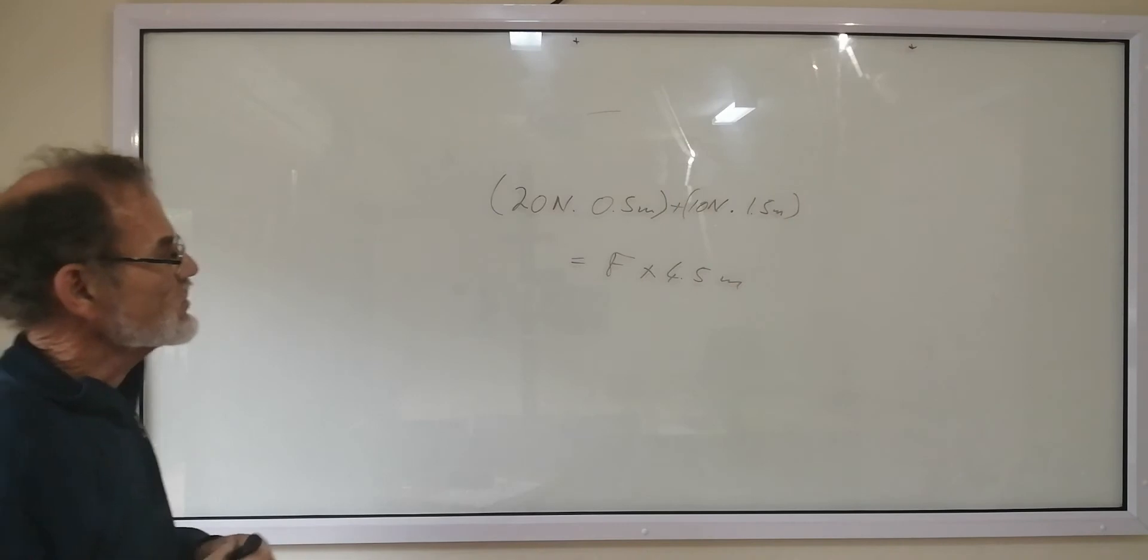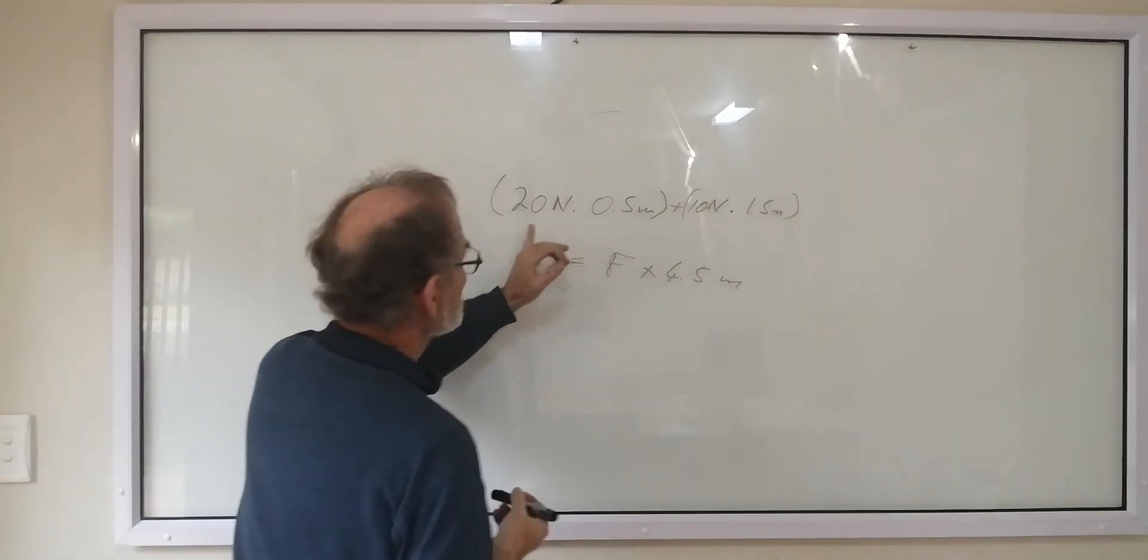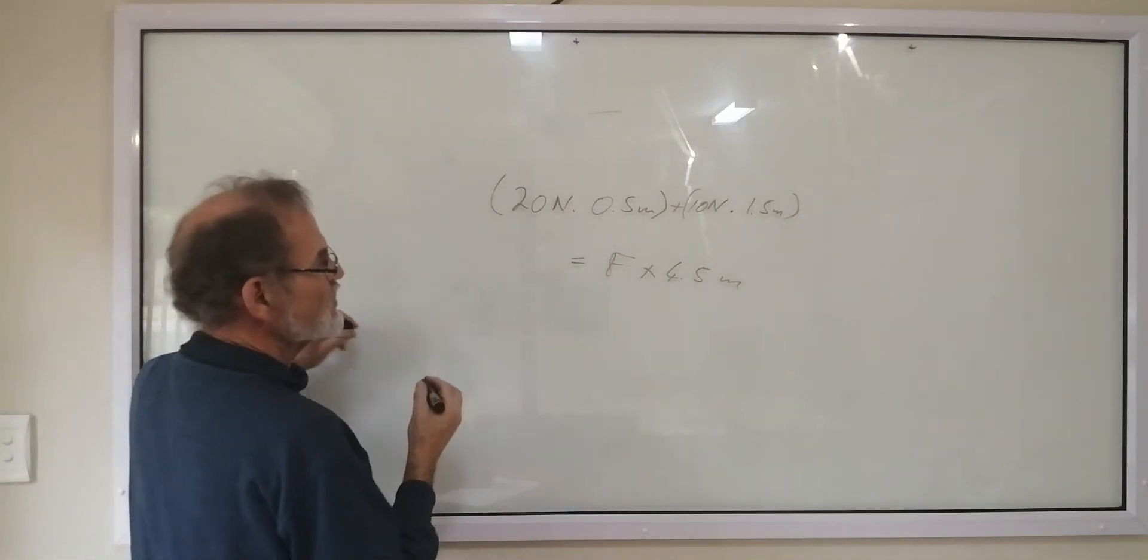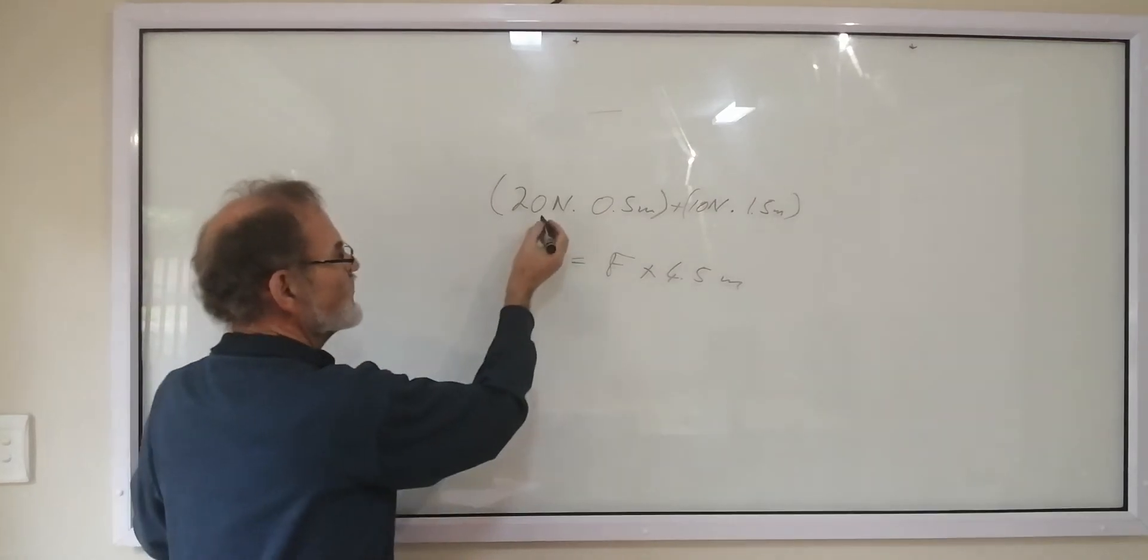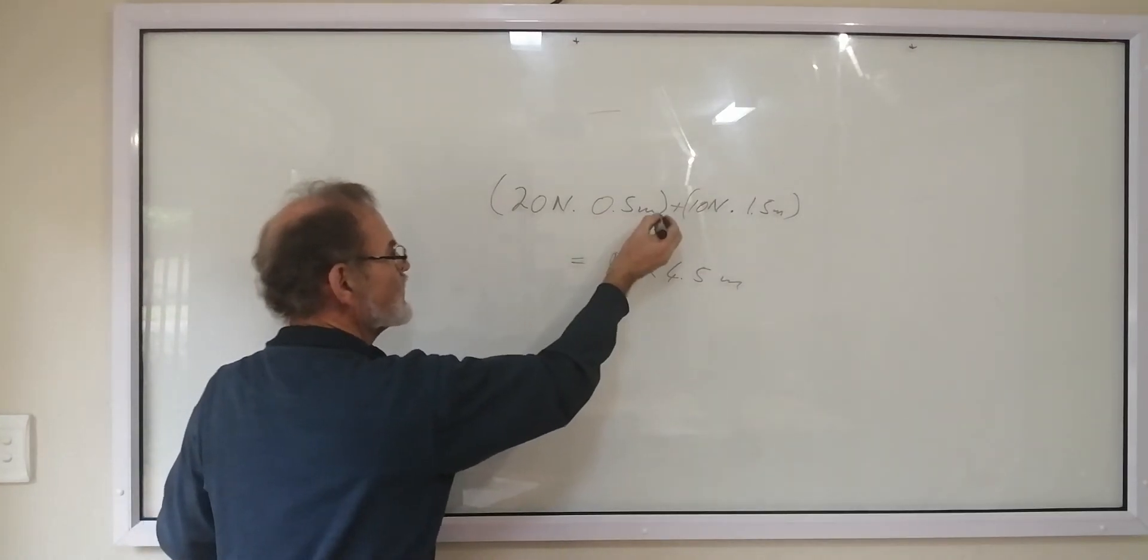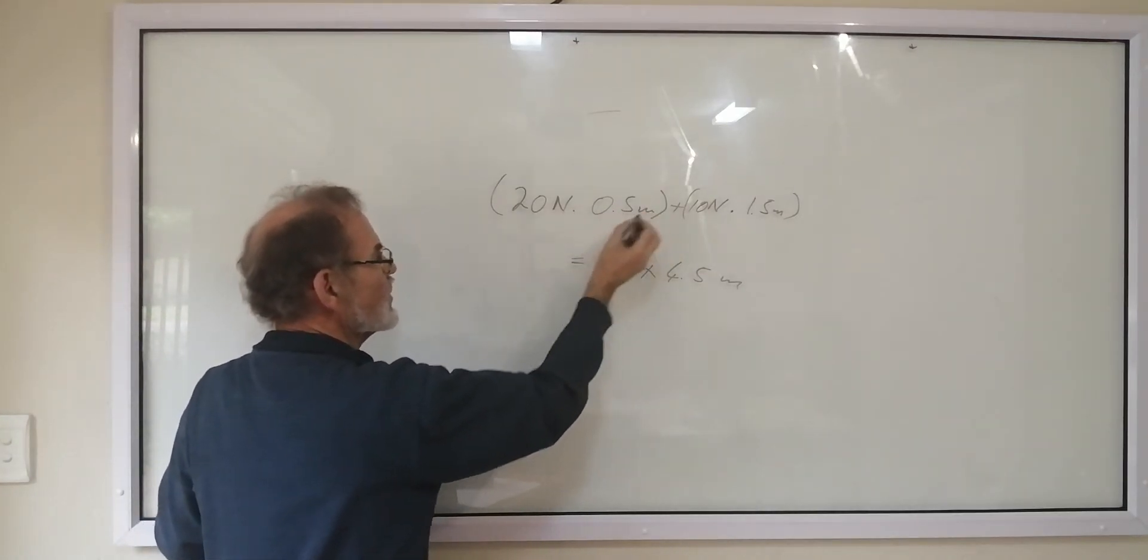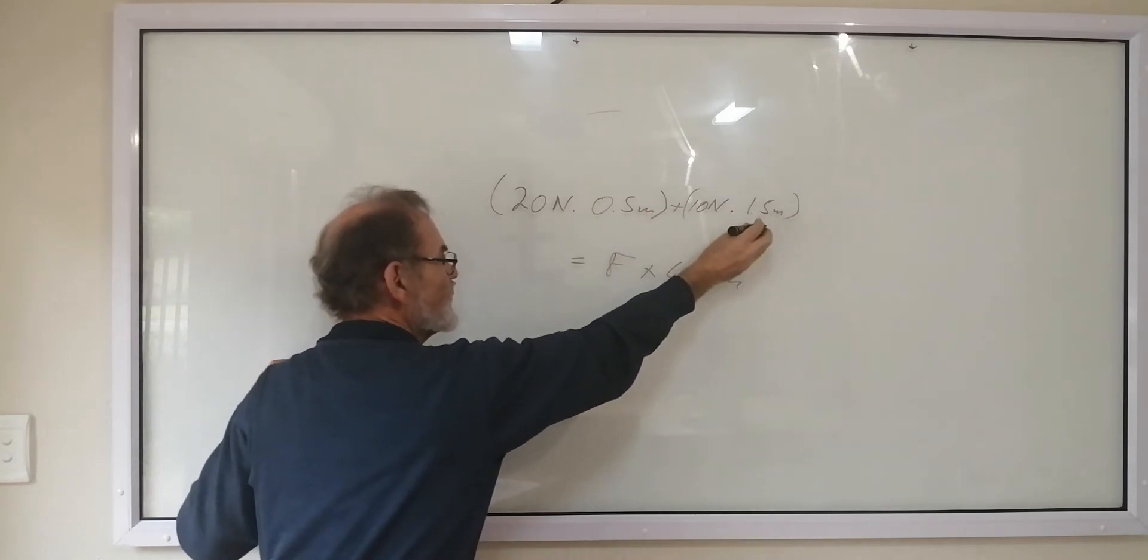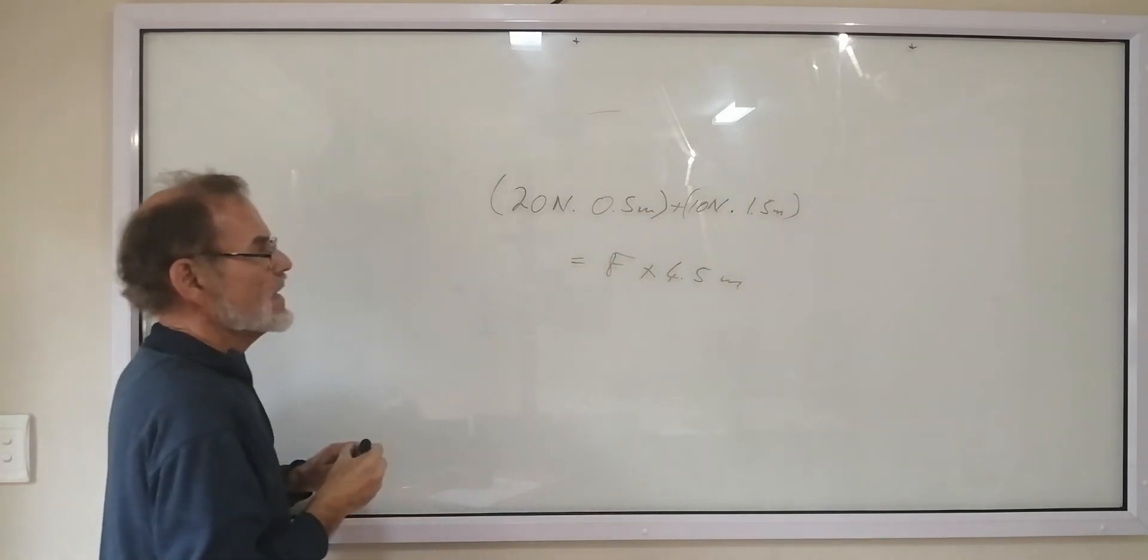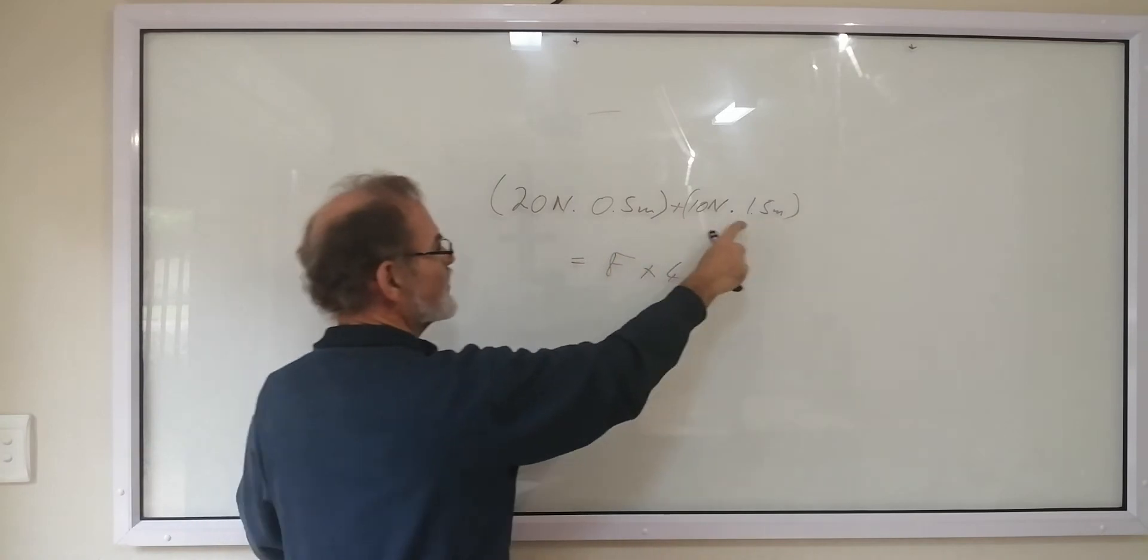So we're going to calculate the brackets first. It's force times distance of the one force. Force times distance of the other force.